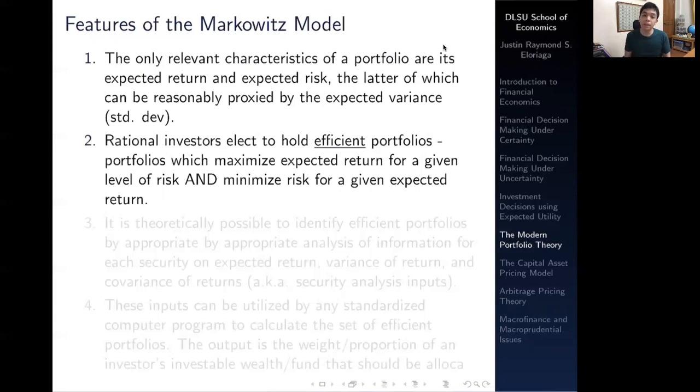The second feature is that rational investors elect to hold efficient portfolios - portfolios which maximize expected return for a given level of risk and minimize risk for a given expected return. So those two conditions must hold. In order to ascertain that a portfolio is particularly efficient, it needs to maximize expected return for a given level of risk but also minimize risk for that given level of expected return. Those are your FOC and SOCs.